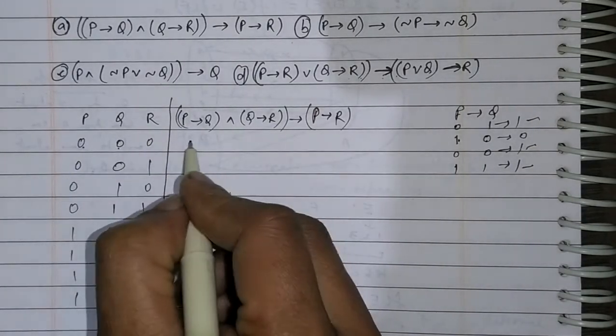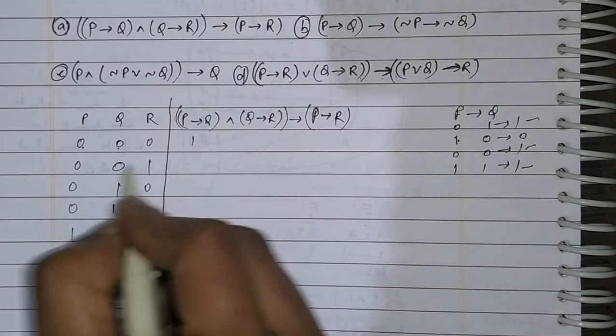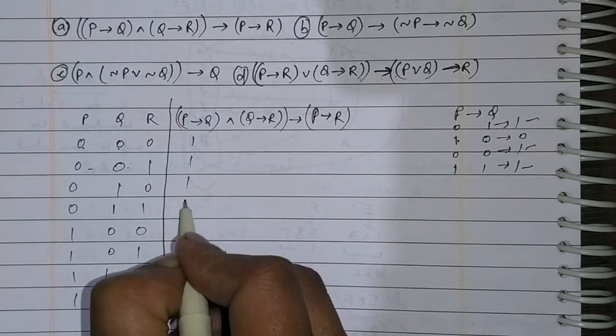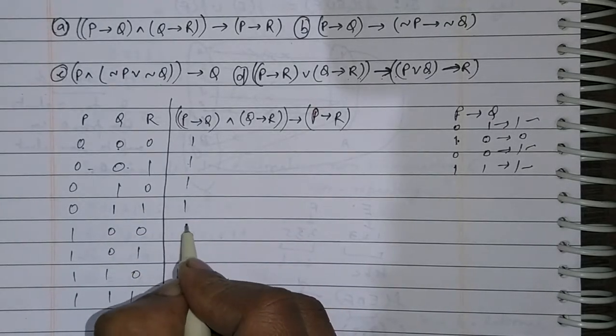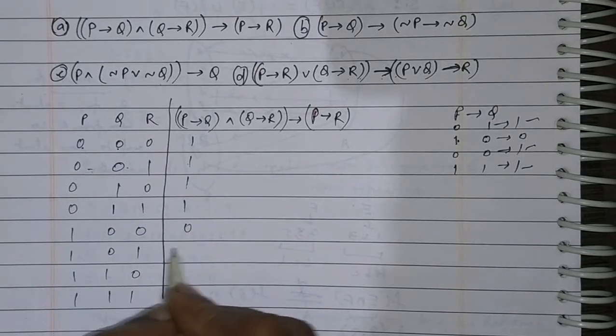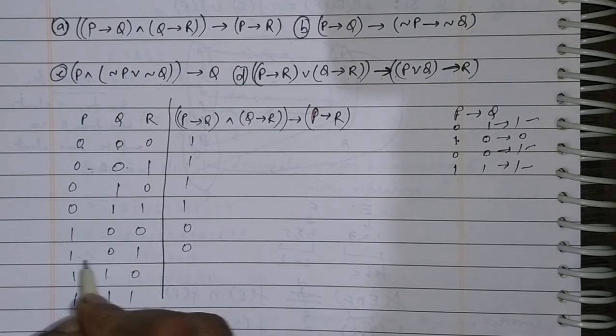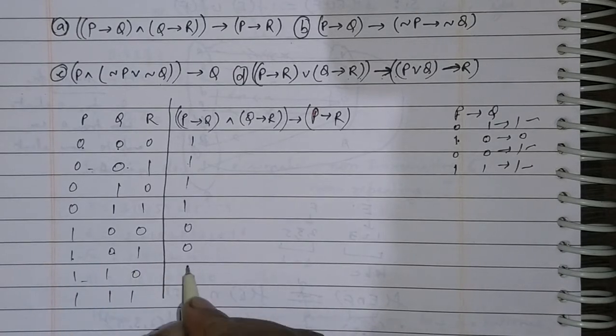For the P implies Q column: zero, zero — it is true, true, true, true. It is false — because P is true and Q is false.